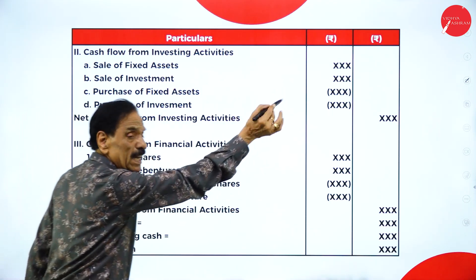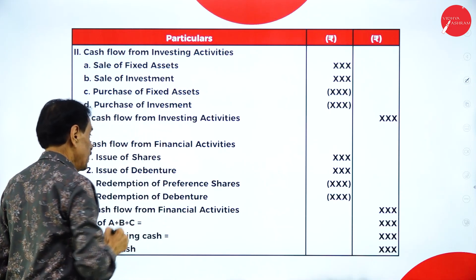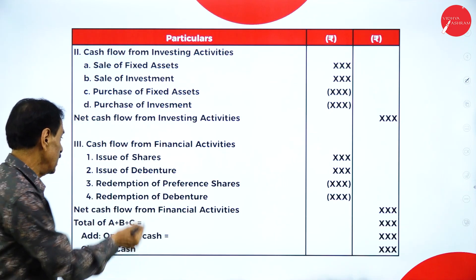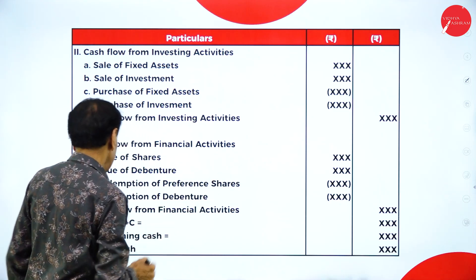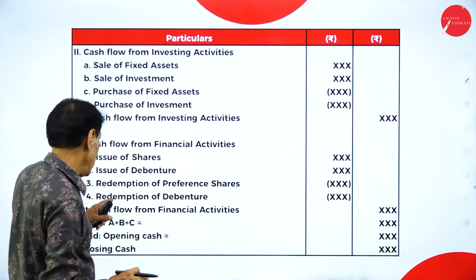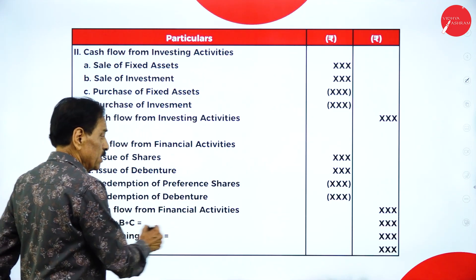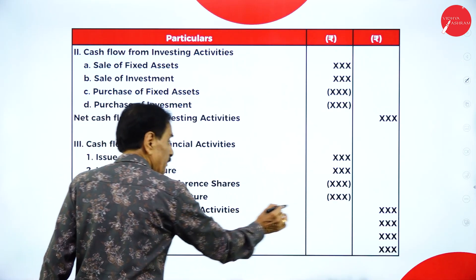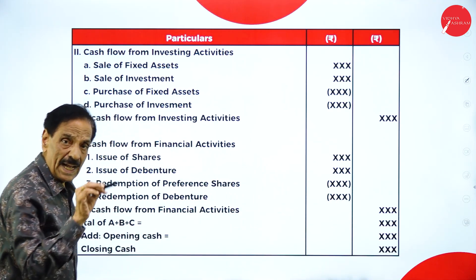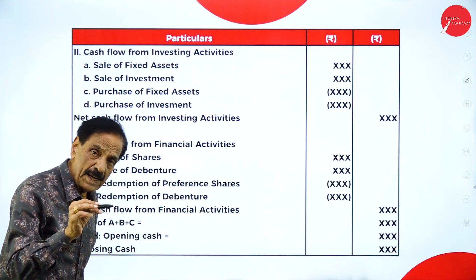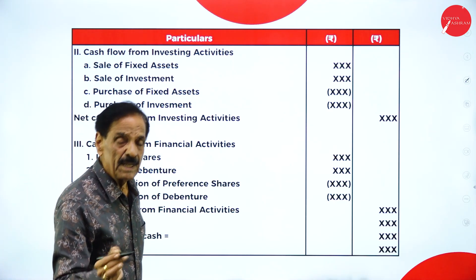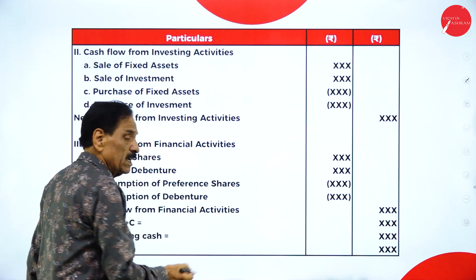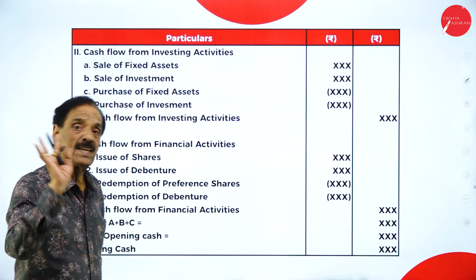Cash flow from financial activity: issue of share — maybe equity share or preference share — issue of debenture, redemption of preference share, redemption of debenture. This is the financial area. Net cash flow from financial activity. Add all three activities — operating, investing, and financial. Add opening cash; that should be equal to closing cash.